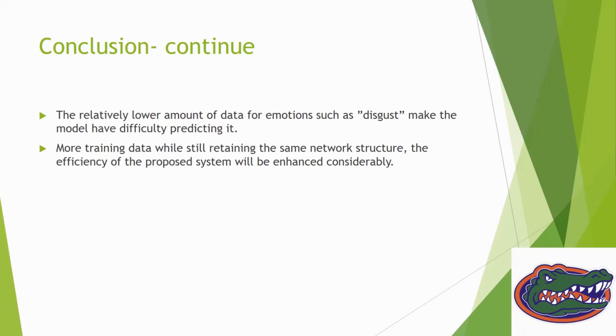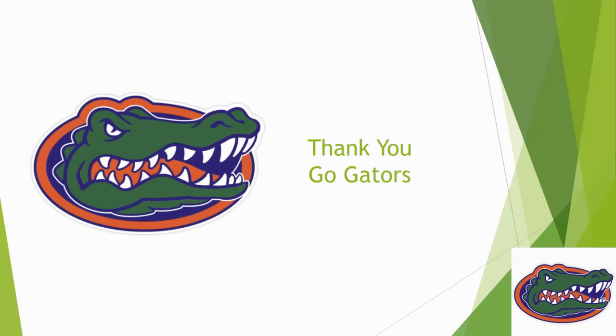This is my final project on this. I've given you the summary showing what we can do if we get more data on different categories, the model will perform much better. Right now the architecture is good, but due to less amount of data, it's giving this kind of accuracy. Thank you. Go Gators.